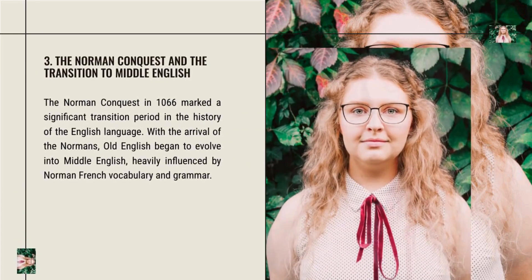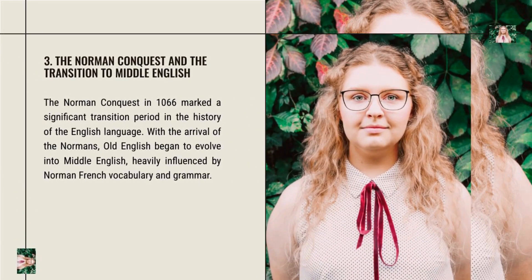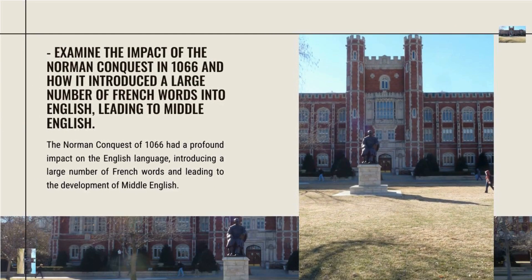The Norman Conquest in 1066 marked a significant transition period in the history of the English language. With the arrival of the Normans, Old English began to evolve into Middle English, heavily influenced by Norman French vocabulary and grammar, introducing a large number of French words.